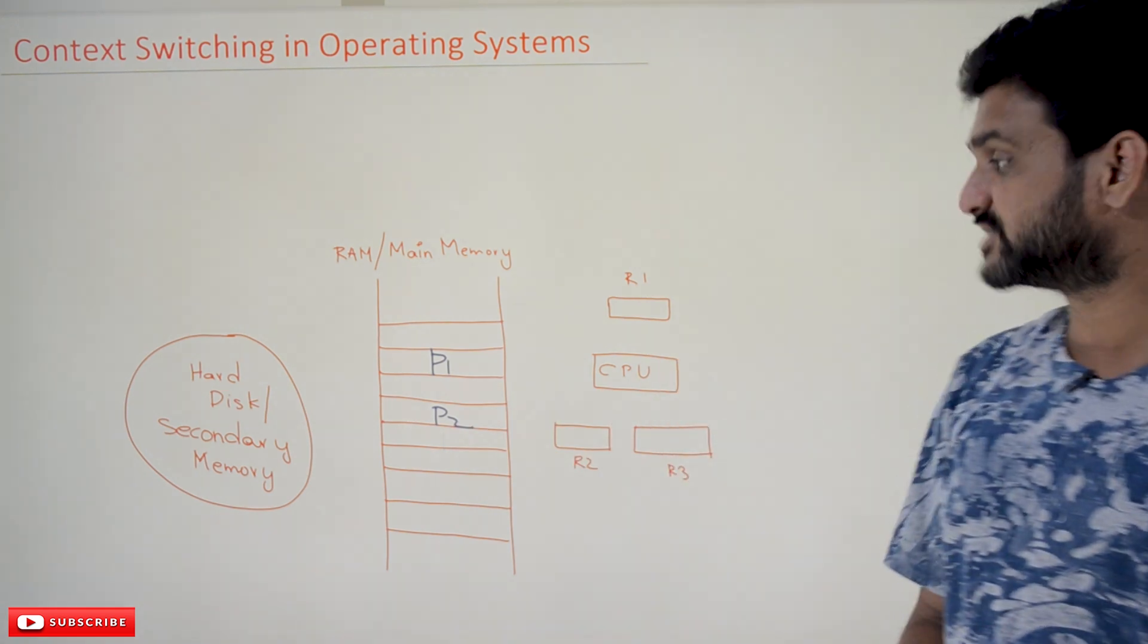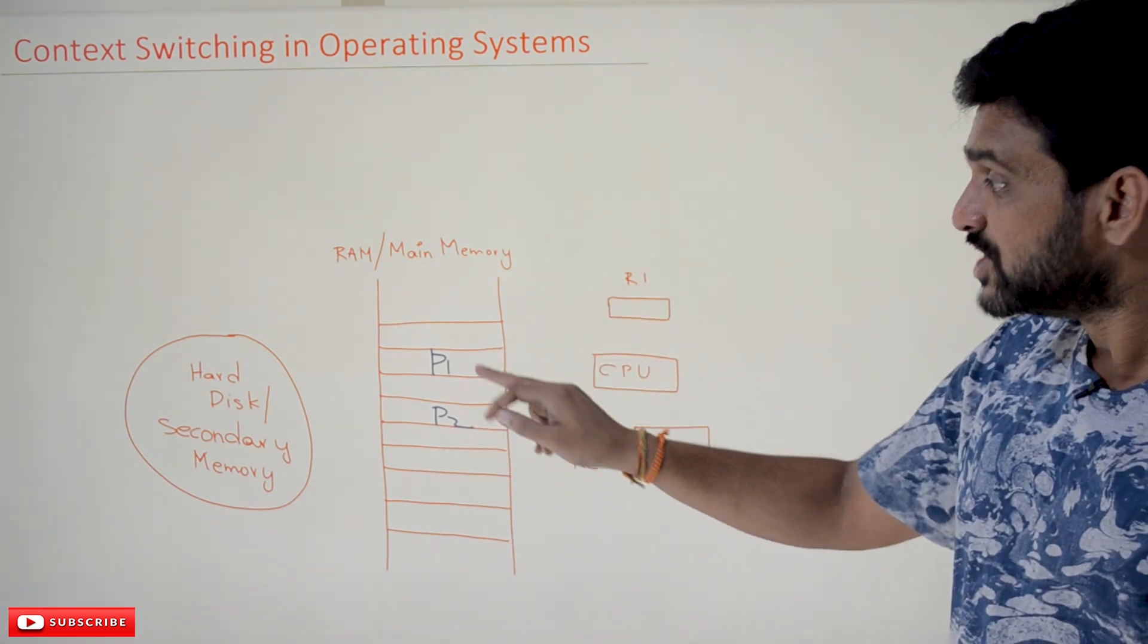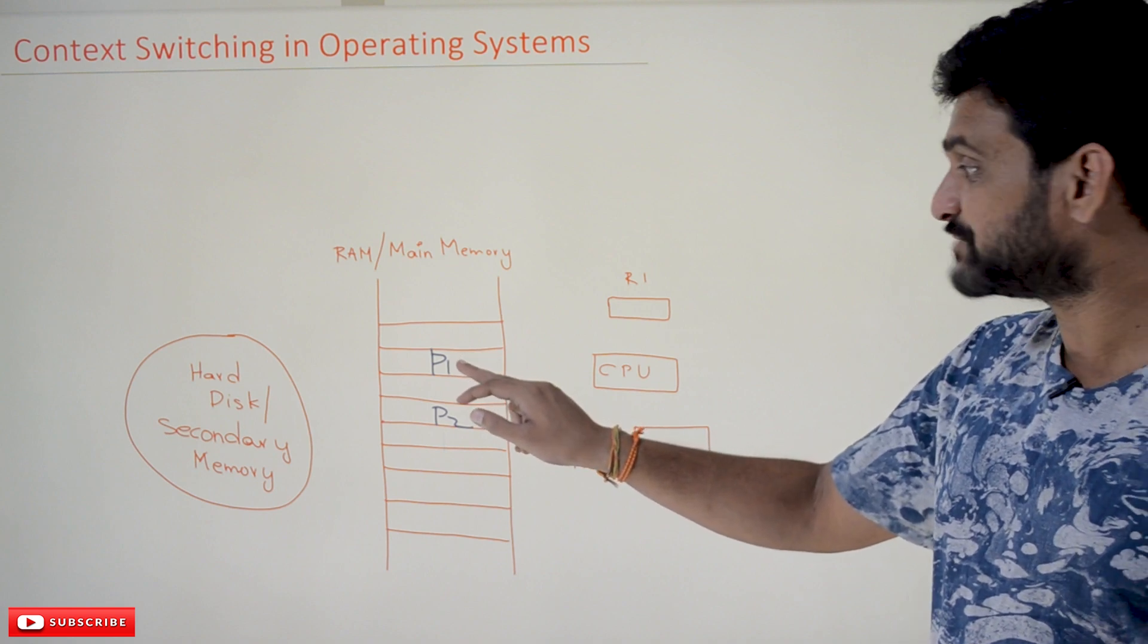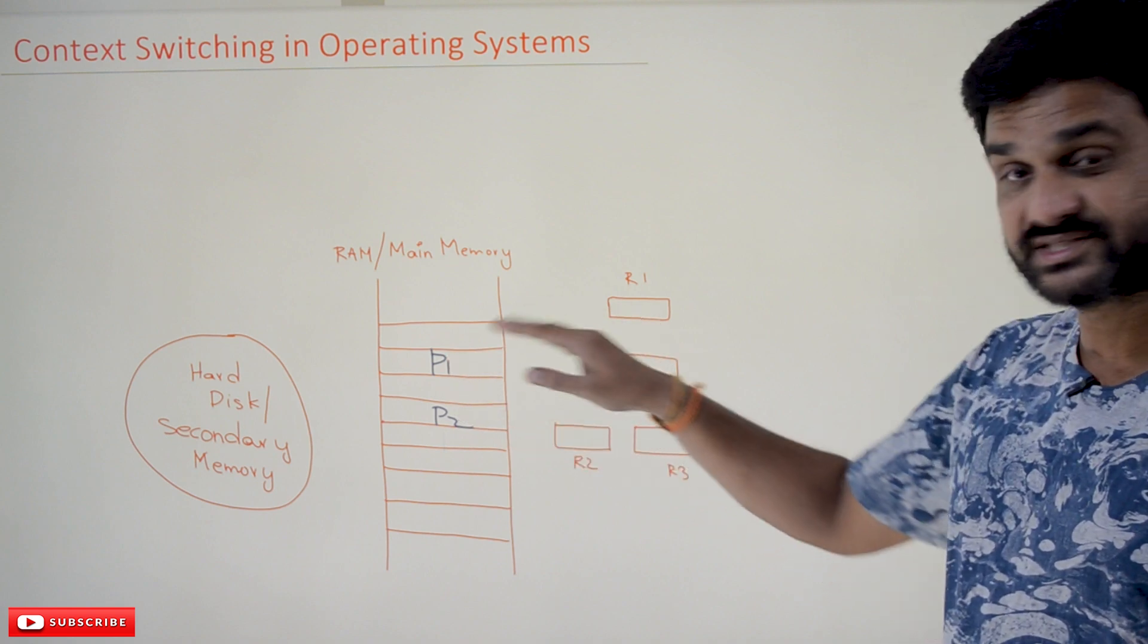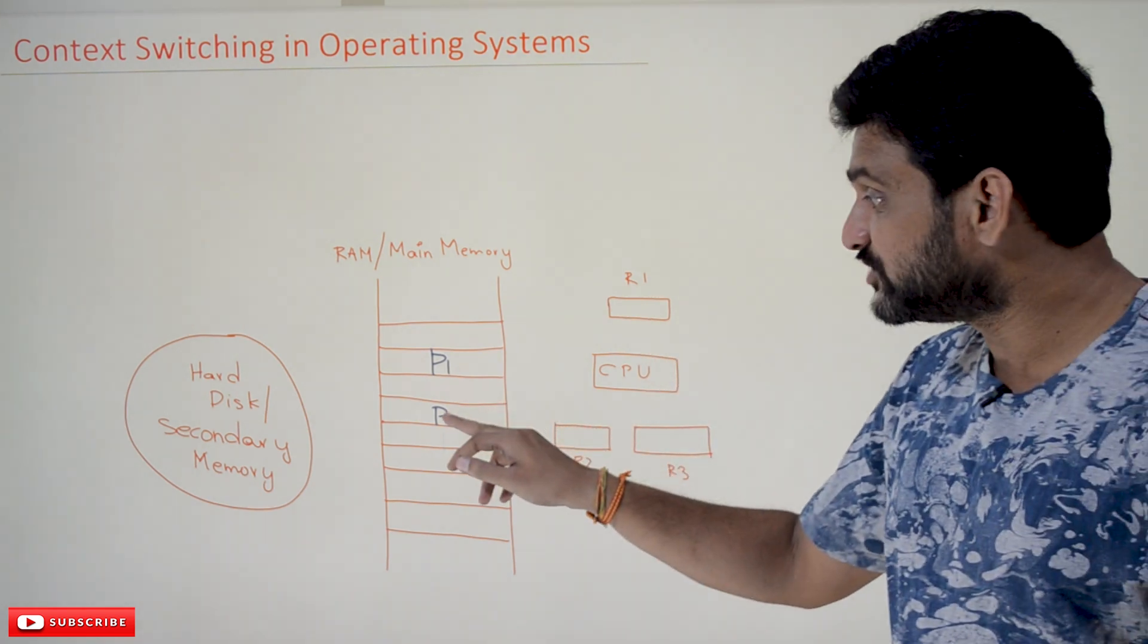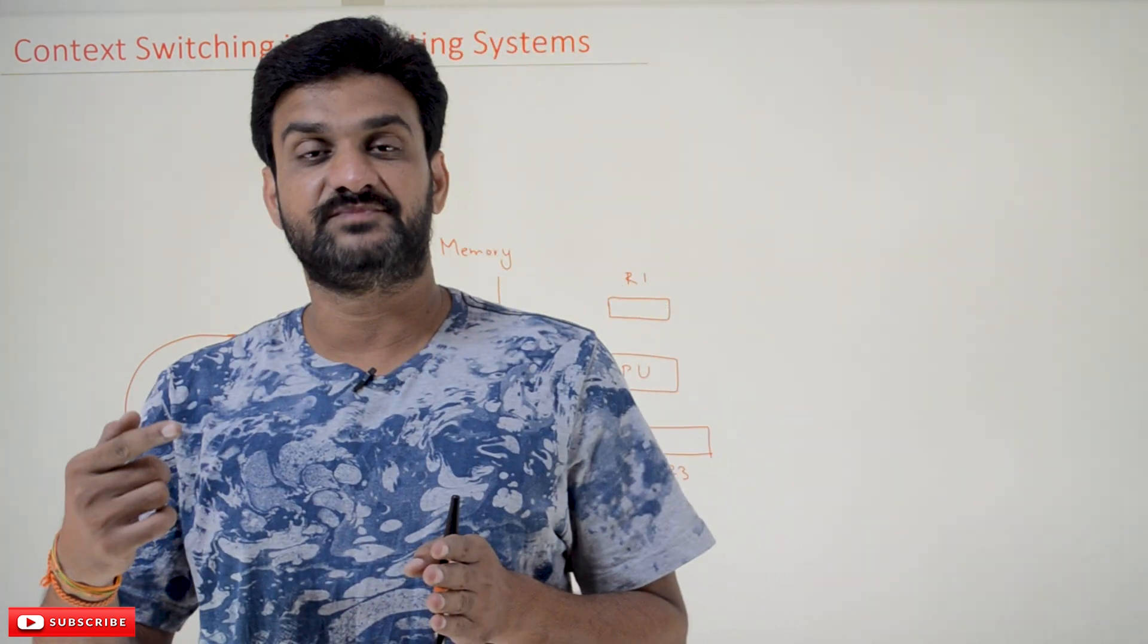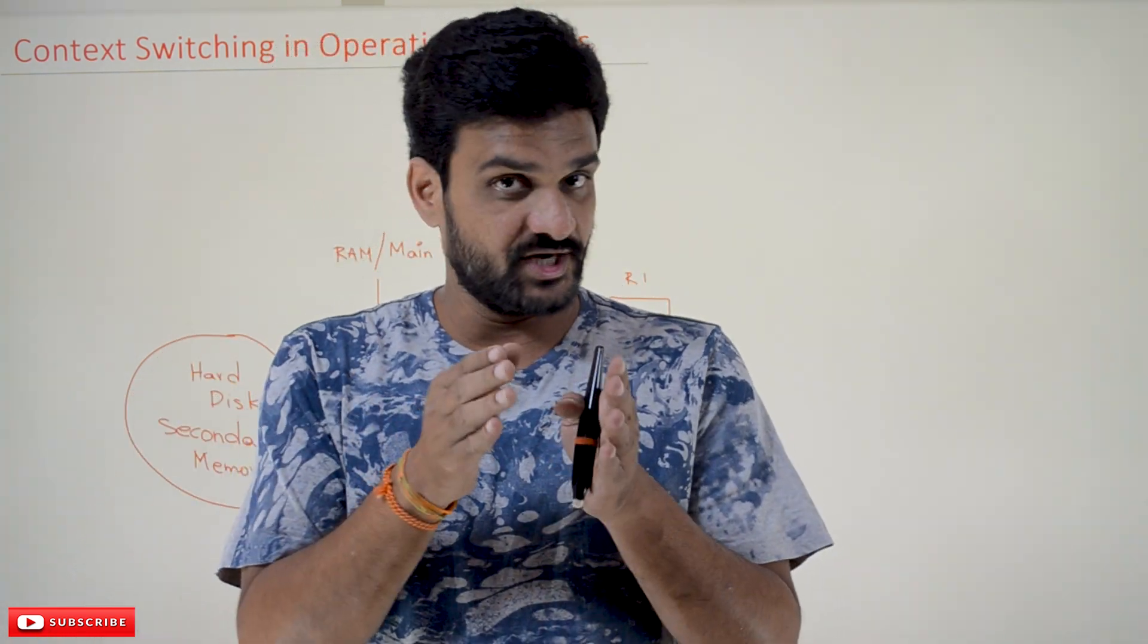To understand this concept, we'll try to take this diagram. In this we are having two processes: one is P1 and P2. P1 is in - let's assume that P1 is in running state, means the instructions of P1 are getting executed on the CPU, and P2 is in ready state.